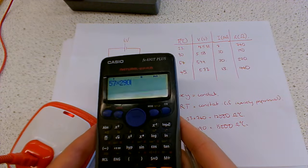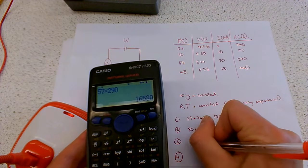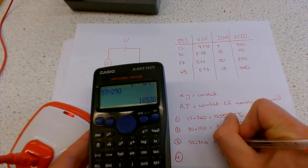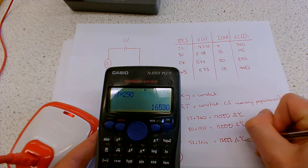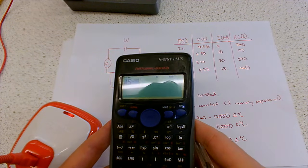Fifty-seven times two hundred and ninety gives us, if I round that to two sig figs, that's seventeen hundred ohm Celsius.